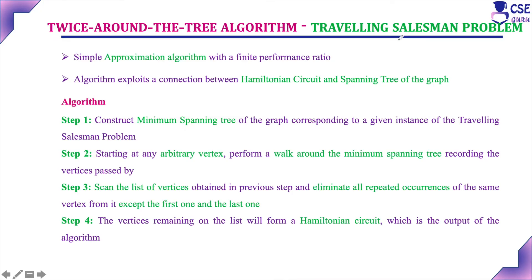The travelling salesman problem, since it comes under difficult combinatorial problems, it is very difficult to solve exactly. If you are implementing the dynamic programming technique, branch and bound technique, it will be a lengthy procedure which is very difficult to implement. Using approximation algorithms like the nearest neighbor algorithm and twice around the tree algorithm, we will get an approximate solution almost equal to the optimal solution.